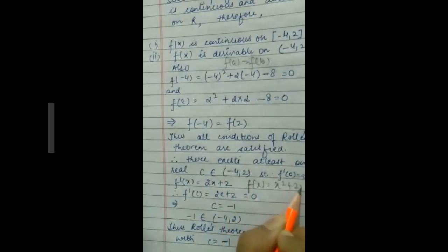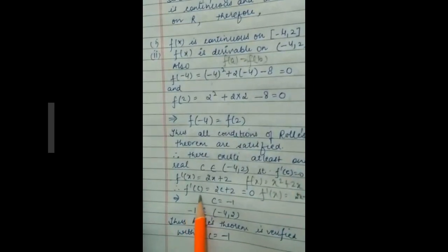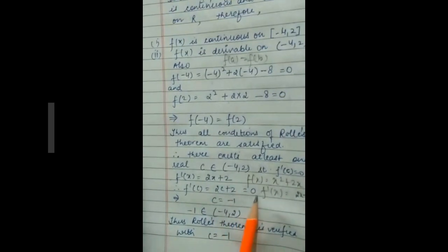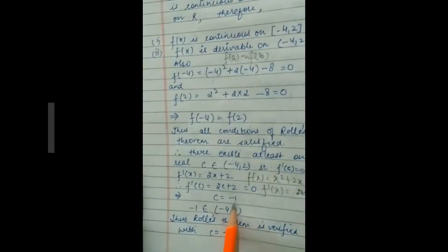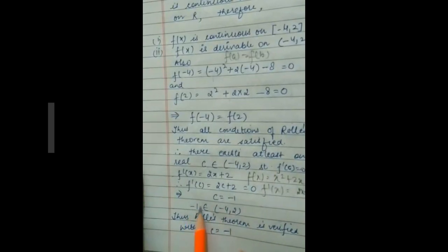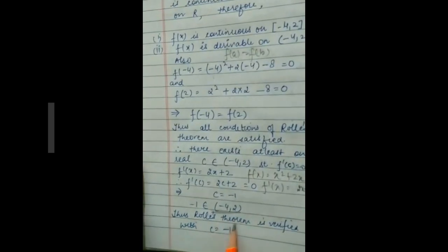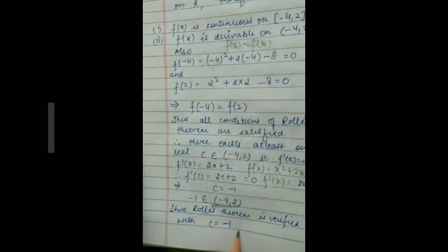Since f(x) = x² + 2x, f'(x) = 2x + 2. So f'(c) = 2c + 2 = 0, which gives c = −1. We can see that −1 belongs to the open interval (−4, 2), and therefore Rolle's Theorem is verified with c = −1.